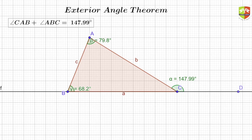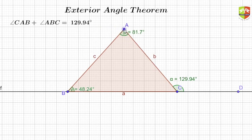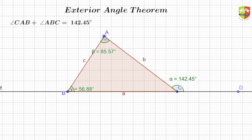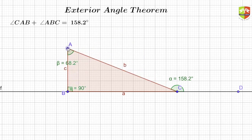Let's move this point around and see whether it matches every time. Indeed it matches — CAB plus ABC equals 118.83 degrees. It works for any configuration. For example, if the angles are 90 and 68.2 degrees, the sum is 158.2. I hope you understood this. Now in the subsequent portion of the video, let's try to prove this theorem.